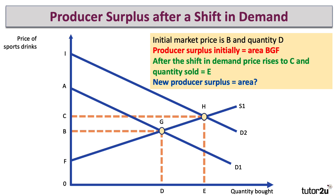Producer surplus goes up to C, H, F — which is an increase of B, C, H, G — a trapezium. Because the producer is getting a better price for their product and they're selling more. Yes, the marginal cost of production has gone up as we move up the supply curve, but they're now getting a higher revenue and effectively a higher profit from selling more in the market.